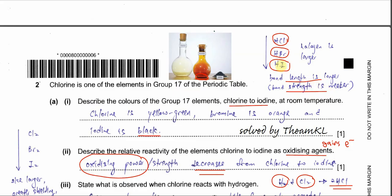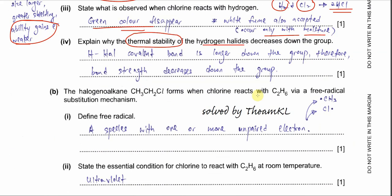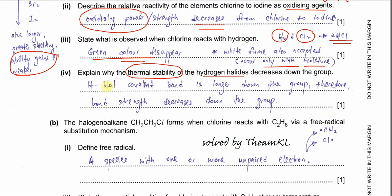So HI is the one that most easily undergoes bond breaking. The hydrogen halides — HCl, HBr, HI — have a covalent bond that gets longer down the group. Therefore bond strength decreases and they are easy to break.